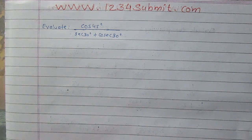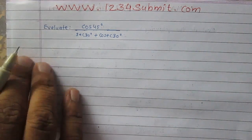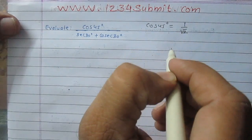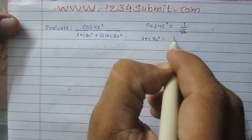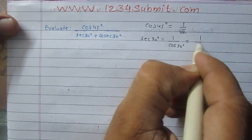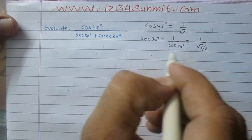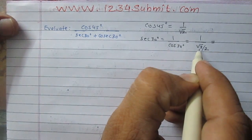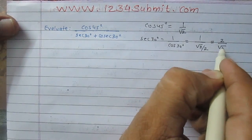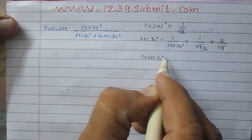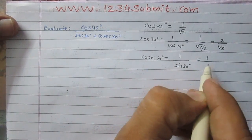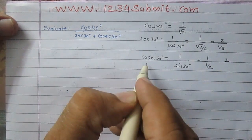Evaluate cos 45° divided by the sum of sec 30° and cosec 30°. We know that cos 45° is 1 upon square root of 2. Sec 30° is the reciprocal of cos 30°, and cos 30° is square root 3 upon 2, so sec 30° is 2 upon root 3. Similarly, cosec 30° is the reciprocal of sin 30°. Sin 30° is 1 upon 2, so cosec 30° is 2.